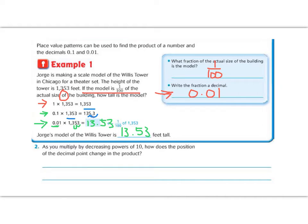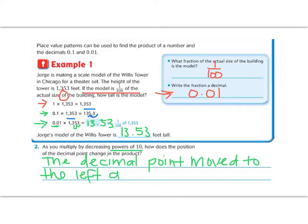Let's answer question number two before we continue on. It says, as you multiply by decreasing powers of ten, how does the position of the decimal point change? Well, we noticed that when we decreased powers of ten, that decreasing means our number got smaller and our decimal moved to the left. So let's write the decimal point moved to the left as we multiplied by a smaller number.